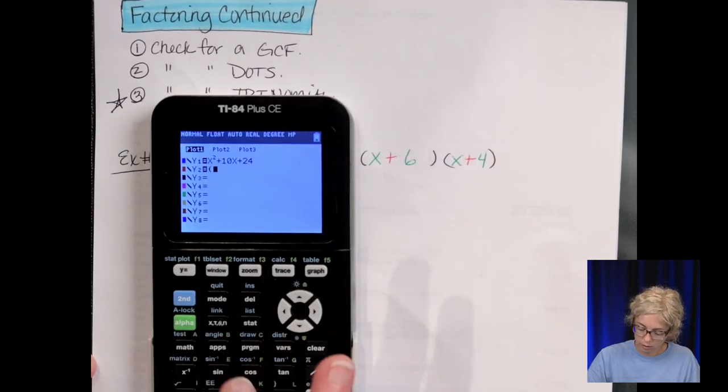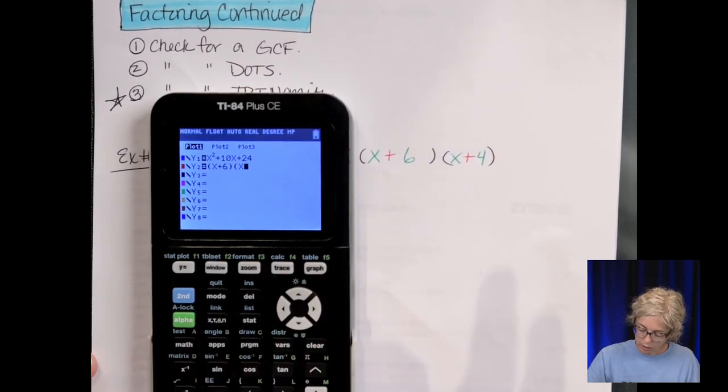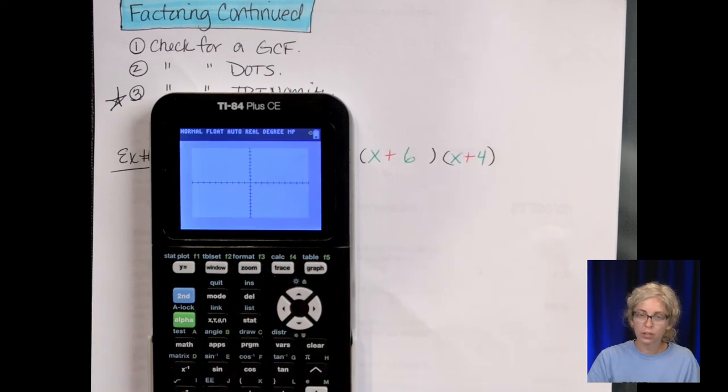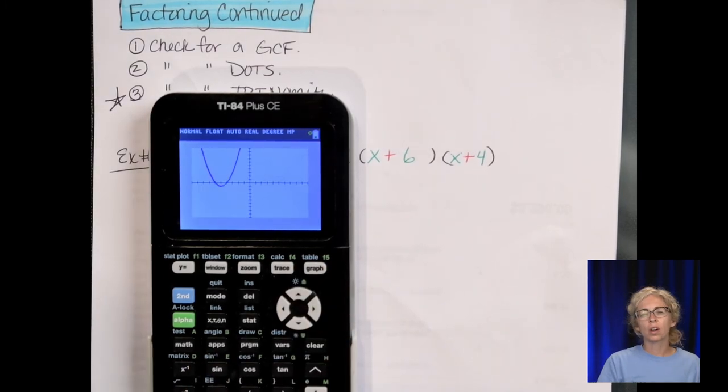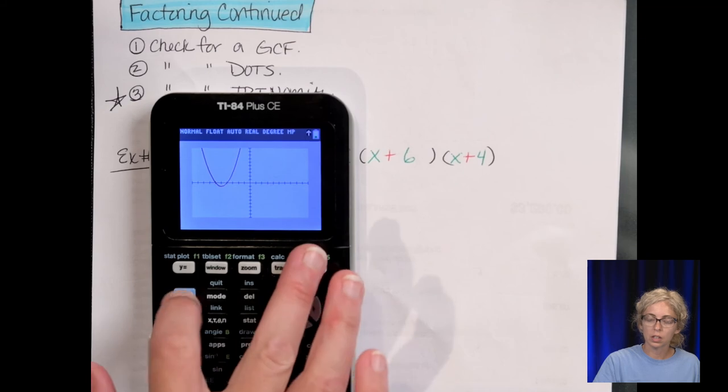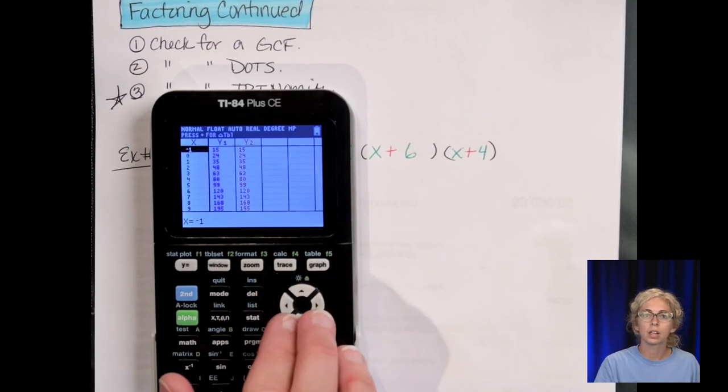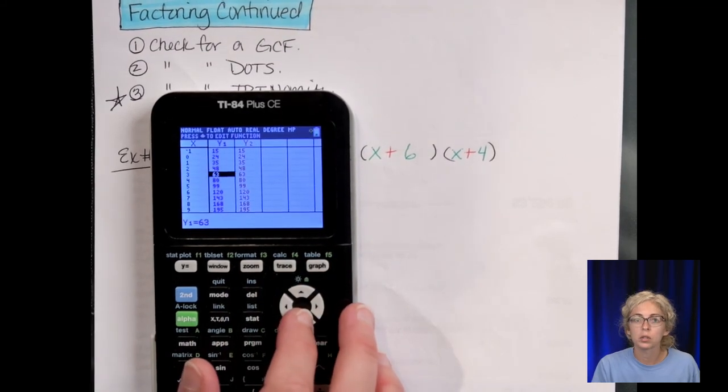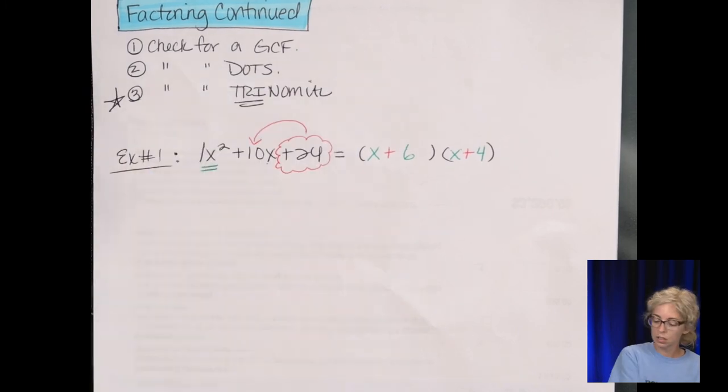So it's either going to be positive times positive or negative times negative. And then they add to 10, a positive 10. Well if they have to add to a positive the signs are both positive. And then the two numbers that multiply to 24 and add to 10 are 6 and 4. So remember you can go to the calculator. Let's clear those out from yesterday. Let's type the original trinomial in, x squared plus 10x plus 24. And then let's type our factors in, x plus 6, x plus 4, graph. Or I should have showed you the table again. If we look at the table then the y value should be the same. So I can see the red goes over the top and then let's again look at the table. And we can see all the y values match. So we know we are correct.